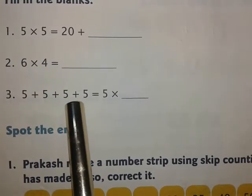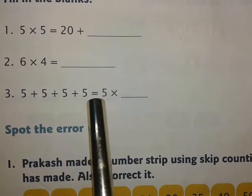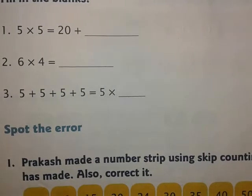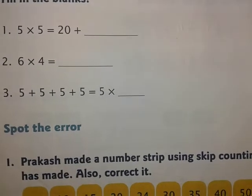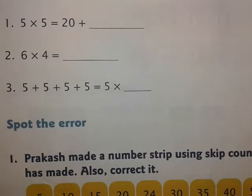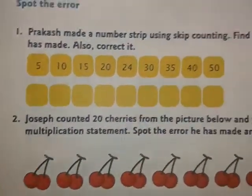5 plus 5 plus 5 — 4 times 5 added. This can also be written as 5 into 4, isn't it? So this is very easy.